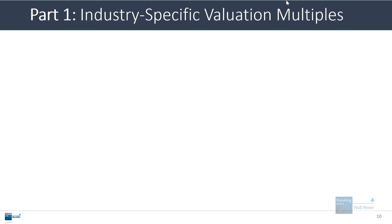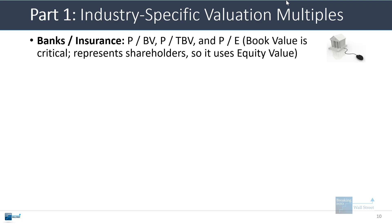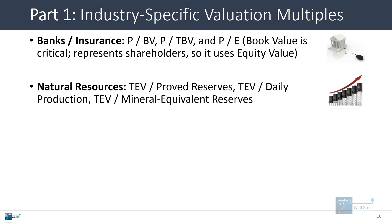There are also industry-specific valuation multiples — probably dozens, but here are the most common. In banking and insurance, price to book value, price to tangible book value, and P/E are very common. Book value represents just the common shareholders and pairs with equity value. With natural resources, you often take enterprise value divided by things like proved resources, daily production for oil and gas companies, or mineral equivalent resources and reserves for mining companies.